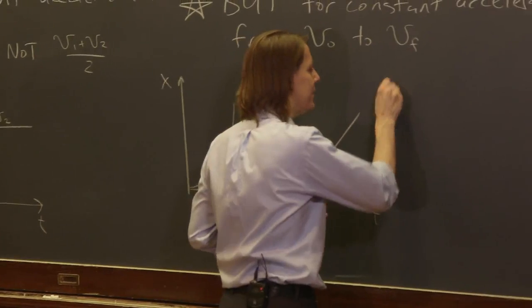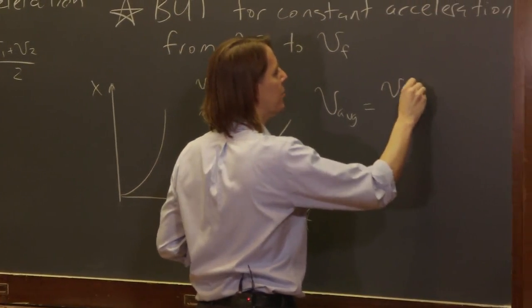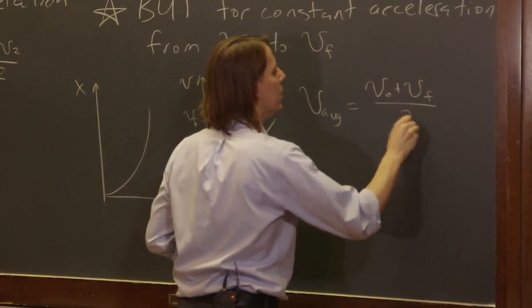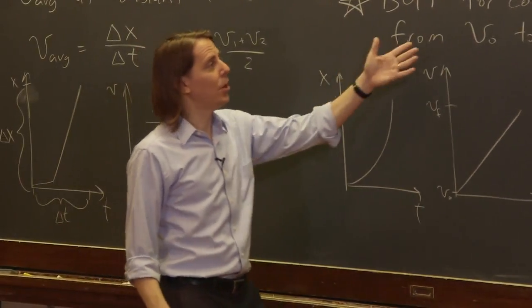So then, in this case, you can say V average is V0 plus Vf over 2. So in a lot of kinematics problems, we usually are at constant acceleration.